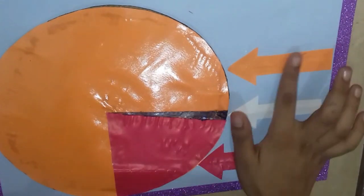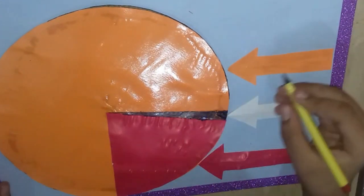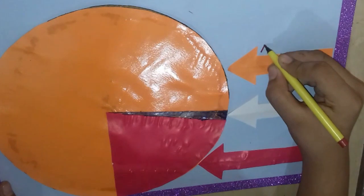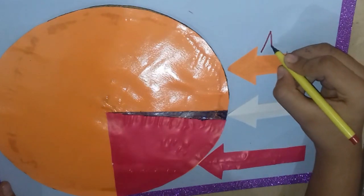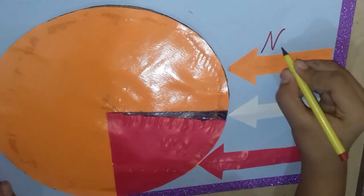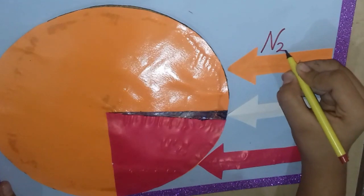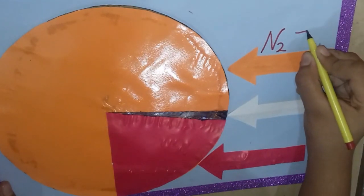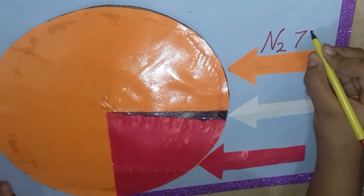This is how I have pasted the arrows and we will label the gas nitrogen as N2, which is 78% in the air.